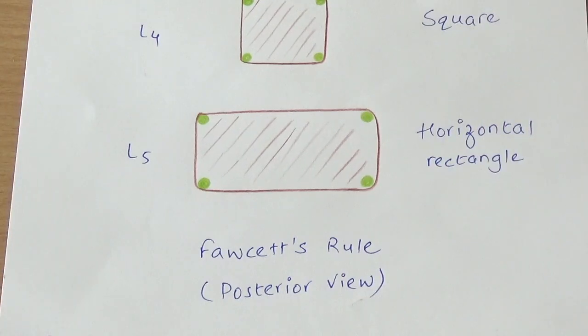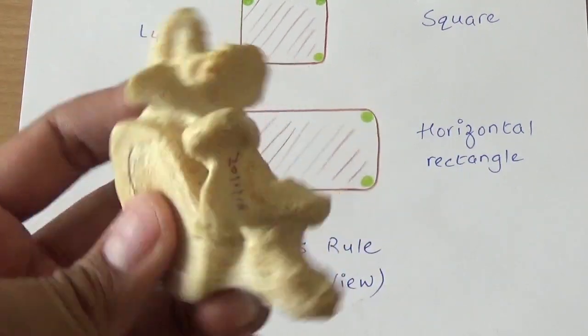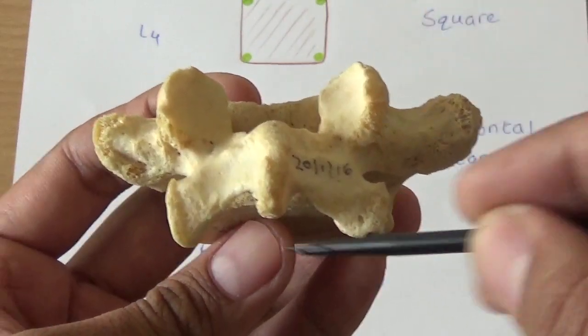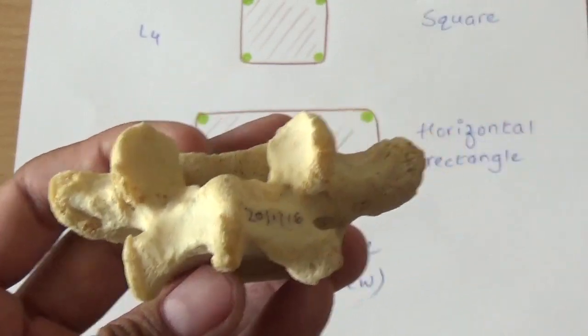There is one rule termed as Fawcett's rule which will help you in identification of a given lumbar vertebrae. As per this rule, you need to see any given lumbar vertebrae from behind and join the four articular processes - two superior and two inferior - and imagine a shape.